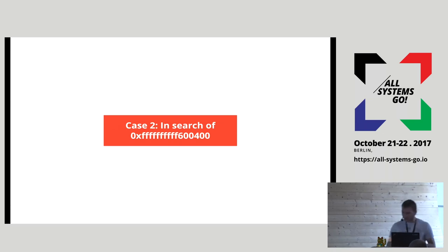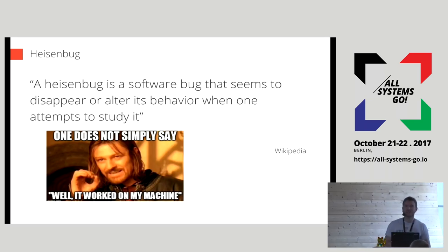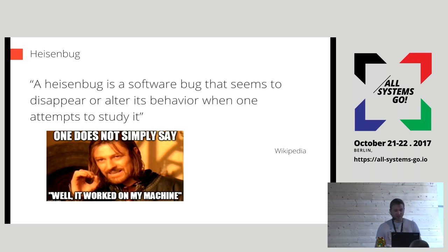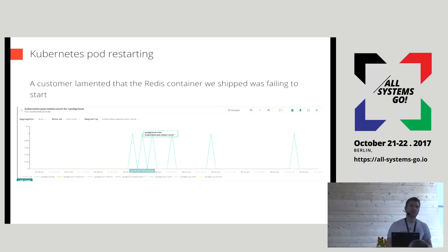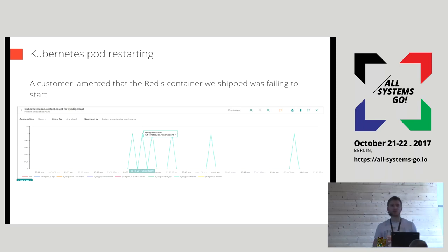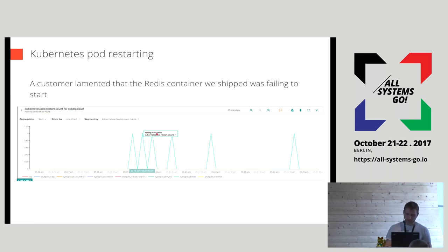The second story is called 'In Search of FFFF600400.' This was a typical Heisenbug — something I thought I could never replicate. It started by us shipping an application to a customer in containers: a Java application plus a couple of databases — MySQL and Redis. The customer said: 'I deployed this application on Kubernetes but your containers are not starting.' They sent a chart of the Kubernetes pod restart count showing the Redis container was constantly restarting with exponential backoff delay, meaning the container wasn't starting itself.